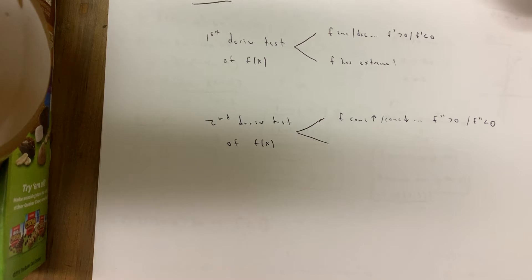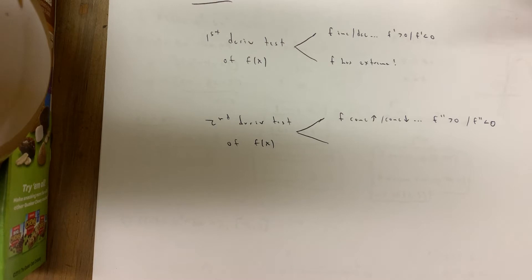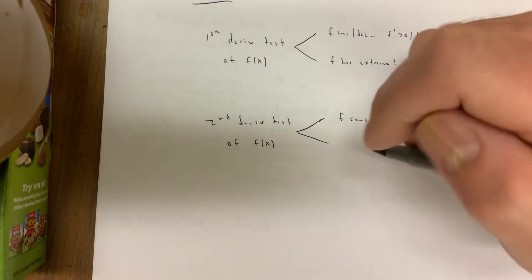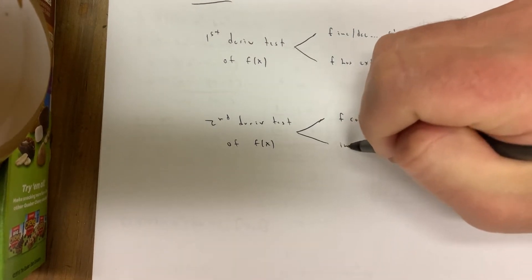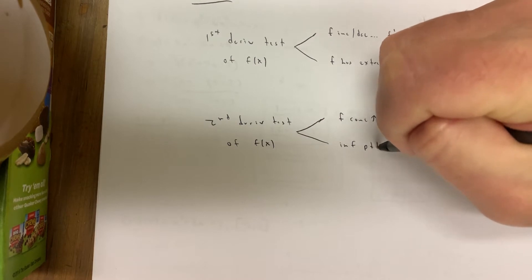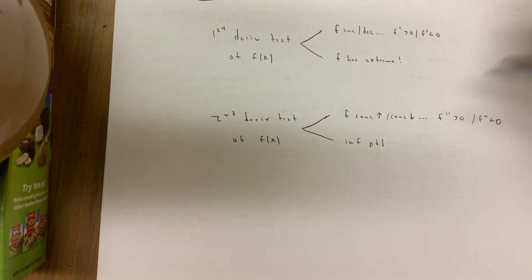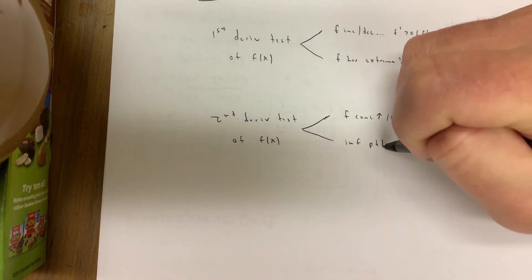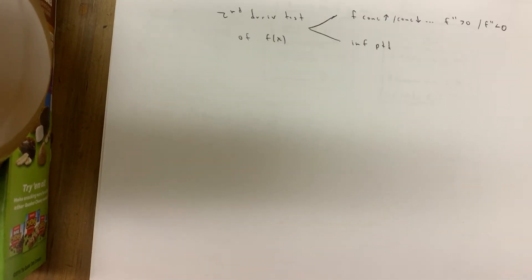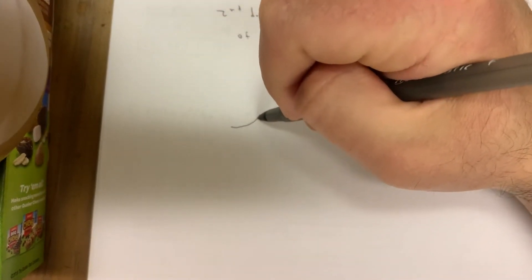Remember, concavity doesn't tell you if you're increasing or decreasing — it tells you how you're increasing or decreasing. Is the rate of increase getting bigger or getting smaller? And if you actually change from concave up to concave down or vice versa, that indicates an inflection point.